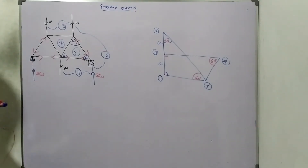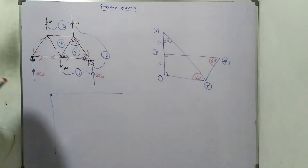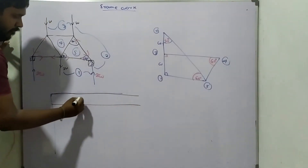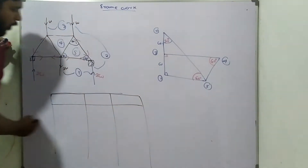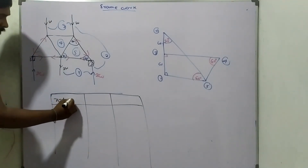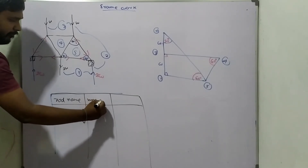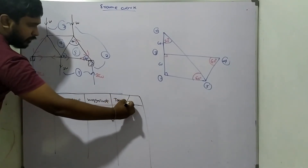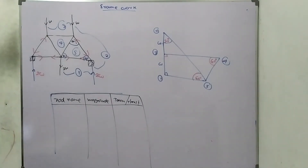Now let's draw the table. The table consists of the rod name, magnitude value, and whether it's tension or thrust. I'm going to take the first rod.